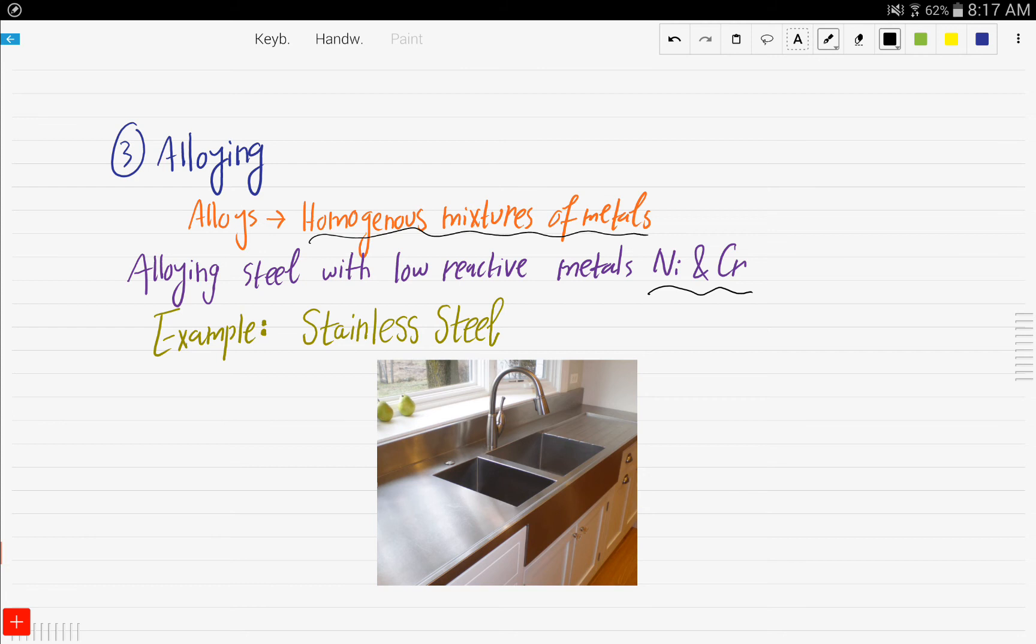One of the most common examples of alloying is stainless steel. Stainless steel is commonly used in kitchen utensils and kitchen countertops, and it really helps to reduce rusting to a great extent.